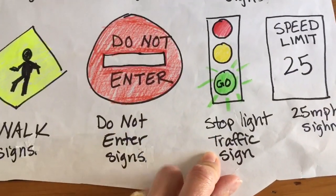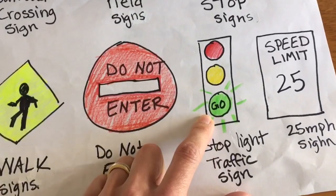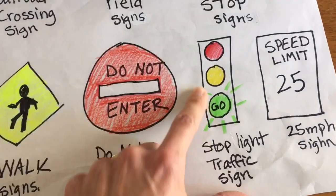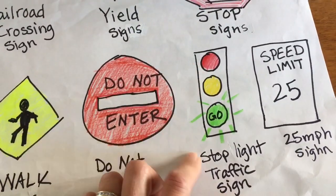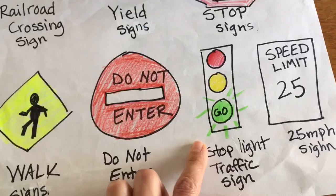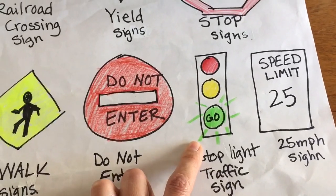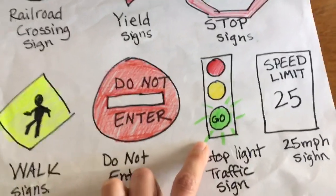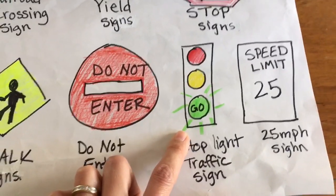Stop light traffic sign — the green is on the bottom, then yellow, then red. You could make some of these signs at home so that when you're riding your bike you can place them outside and practice using the correct signs.